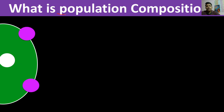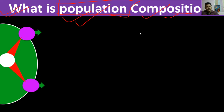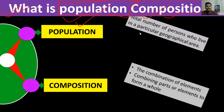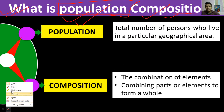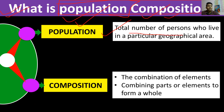The chapter's name itself is Population Composition. What do you understand by population composition? You already know the meaning of population from the last two chapters. The meaning of population is the total number of persons who live in a particular geographical area.